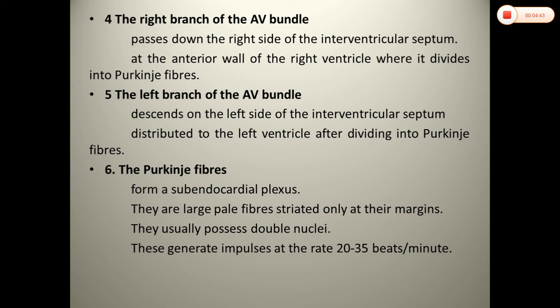The left bundle branch also divides into Purkinje fibers. The Purkinje fibers form a sub-endocardial plexus. They are large, pale fibers striated on their margins. They usually possess double nuclei, and these generate impulses at 20 to 35 beats per minute. The Purkinje fiber sub-endocardial plexus has double nuclei.